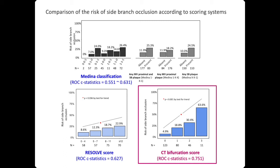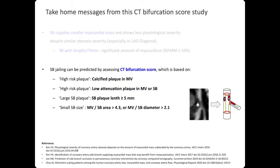The C-statistic was 0.75, compared to angiographically derived scores, medina classification, or the Resolve Score. Take-home messages from the C-divification score: side-branch jailing can be predicted by assessing the C-divification score, which is based on plaque characteristics and size — including calcified plaque in the main vessel, low-attenuation plaque in the main vessel or side branch, side-branch plaque length of more than 5 mm, or a smaller side branch compared to main branch defined by an area ratio of more than 4.3.